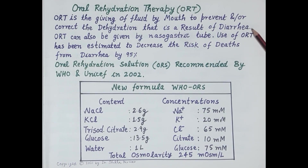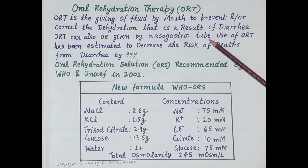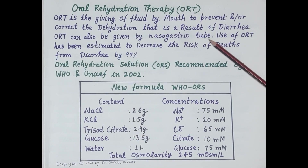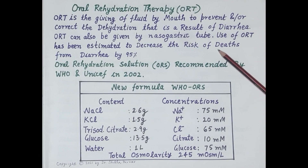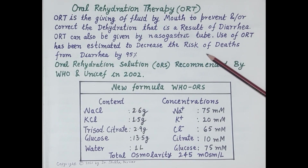ORT is given by mouth and also can be given by nasogastric tube. The most important aspect of diarrhea management is replenishing fluid and electrolyte loss, which can be accomplished by administration of oral rehydration solution. Use of ORT has been estimated to reduce the risk of deaths from diarrhea by about 95%.